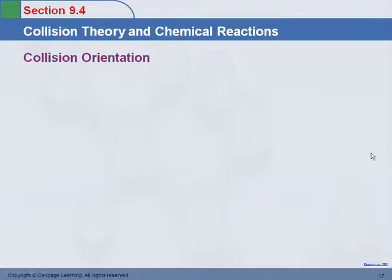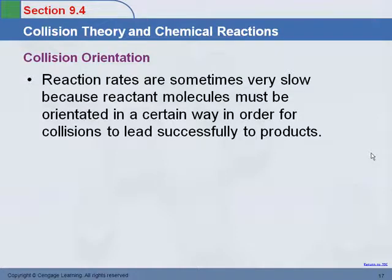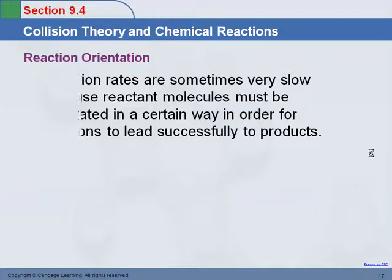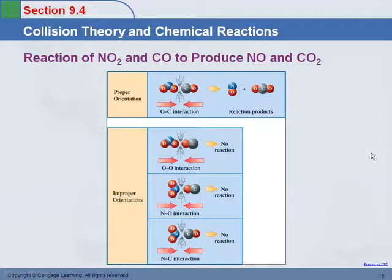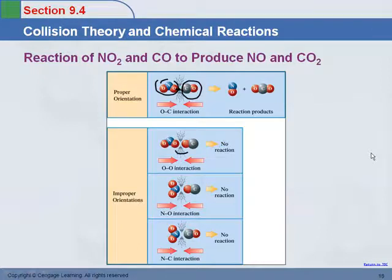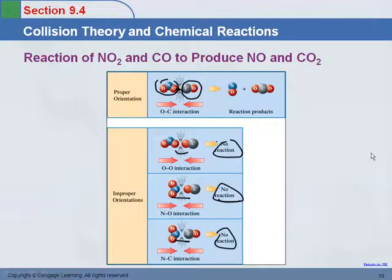Orientation also matters. For complicated reactant molecules, they must be oriented in a particular way for collisions to lead to products. For example, NO2 and CO molecules must collide where the C runs into the O. Out of four possible collision orientations, only one actually produces products.